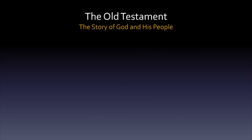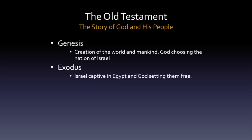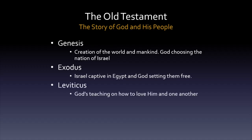Now let's talk about Nehemiah. It is part of the continuing saga of God and his people. Some of you may not know where Nehemiah is located in your Bible, or how it fits with the rest of the Old Testament, and that's okay — we'll go through this together. Starting from the beginning, Genesis tells us about the creation of the world and mankind. We see God creating and choosing the nation of Israel. Exodus describes the people of Israel enslaved in Egypt and how God frees them.